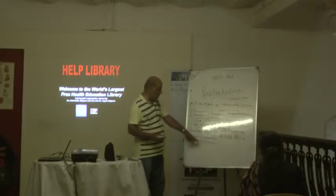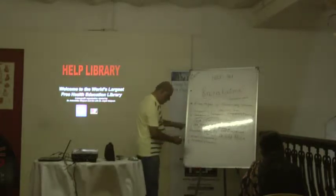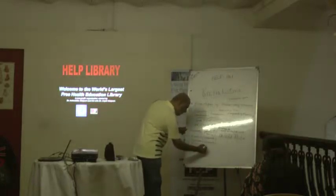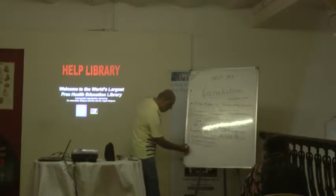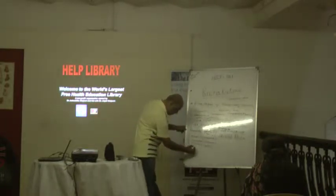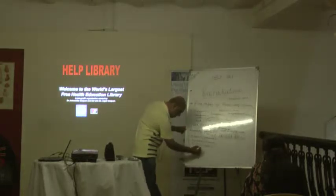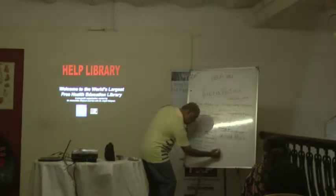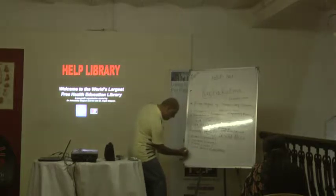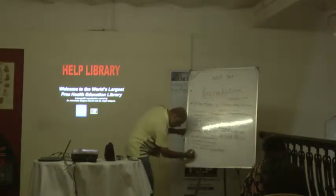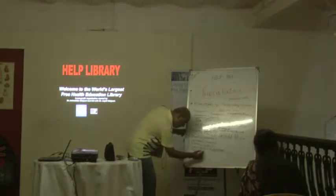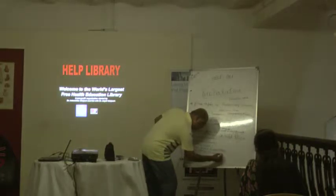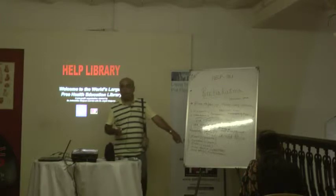Number two is purgation, that is called Virechan. Number three is enema, that is called Vasti. Number four is Nasya — nasal drops or snuff. And the last, number five, is bloodletting, that is called Raktamokshana. These are called five types of purificatory procedure.